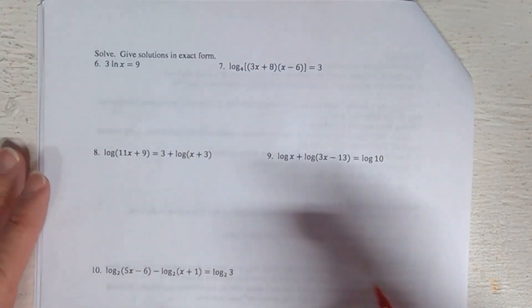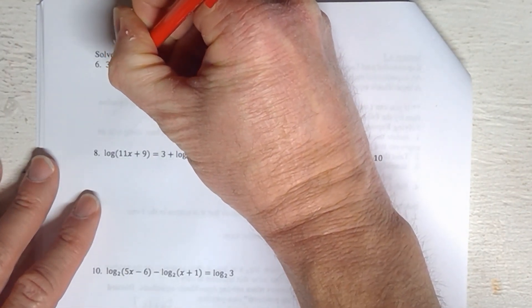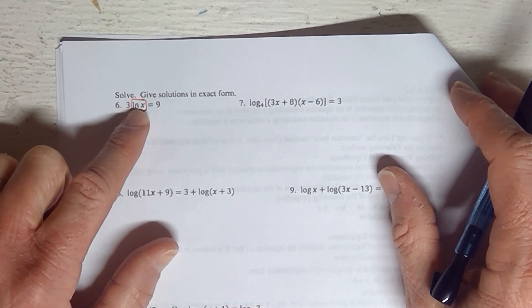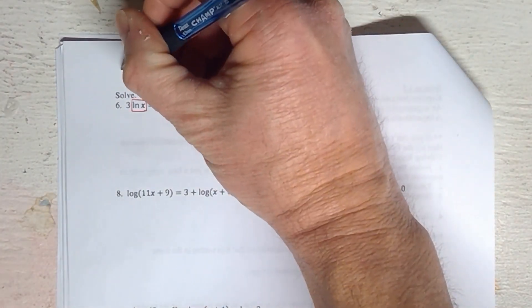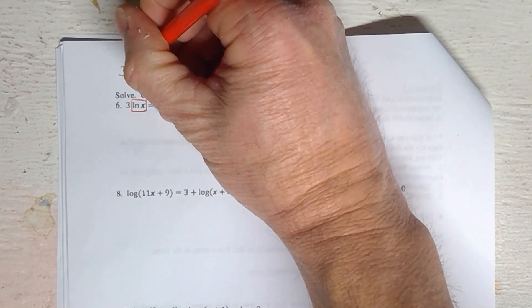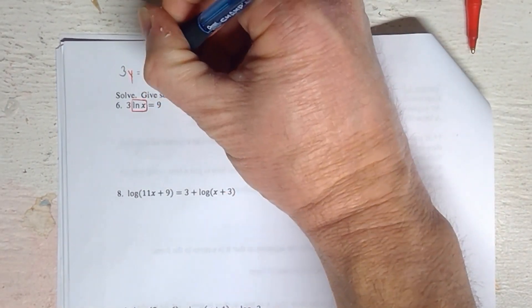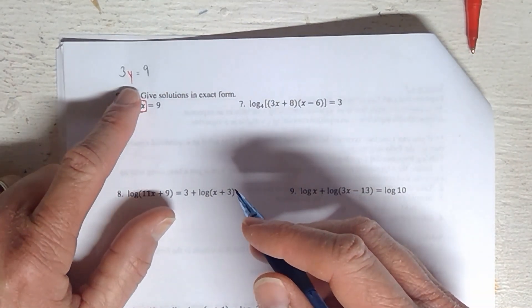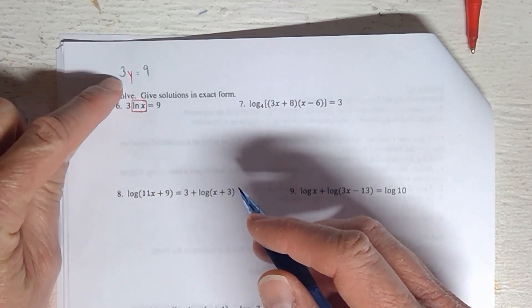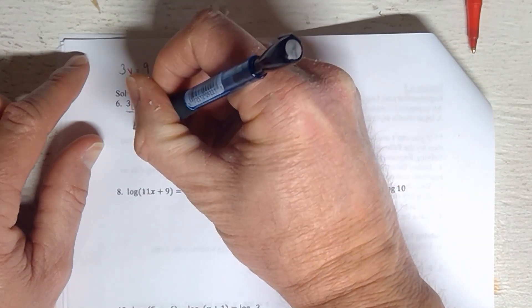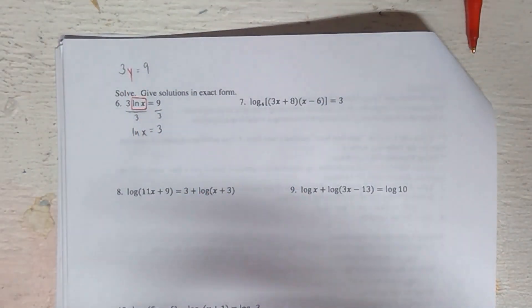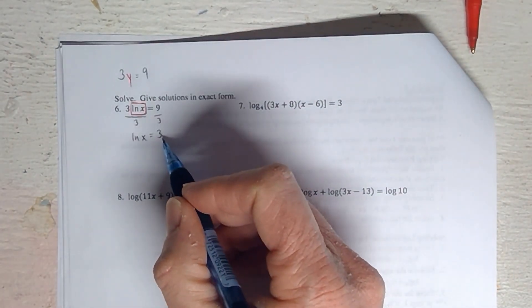The first thing you have to do is get the ln — same thing as log with base e — by itself, meaning the log along with its invisible base e and the product term x. Just like getting a variable by itself: pretend it's a variable, and to get it alone you divide by three. So you divide by three and get ln(x) = 3.